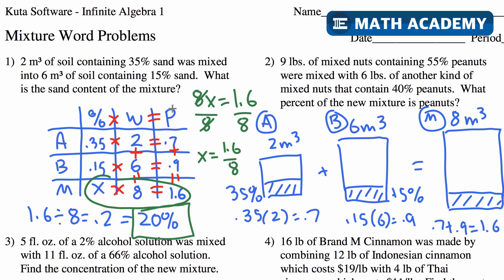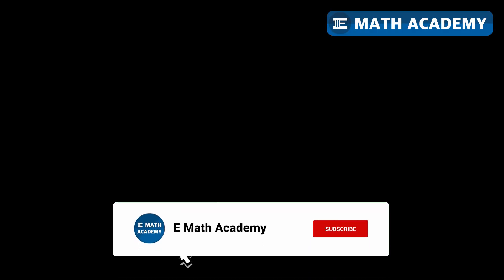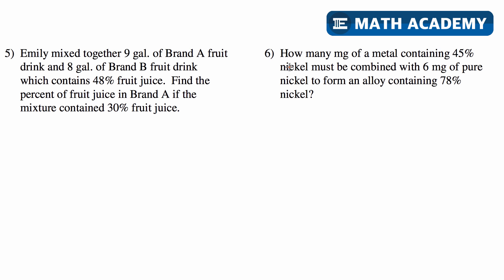Let's try one more problem that's going to be a little bit trickier, but we can use the same table to set it up and solve. Problem number six says: how many milligrams of metal containing 45% nickel must be combined with 6 milligrams of pure nickel to form an alloy containing 78% nickel?